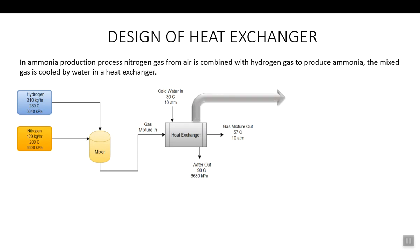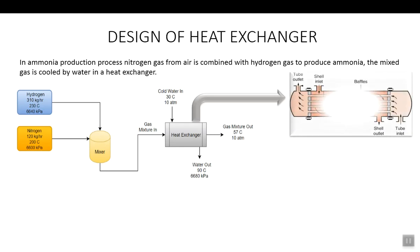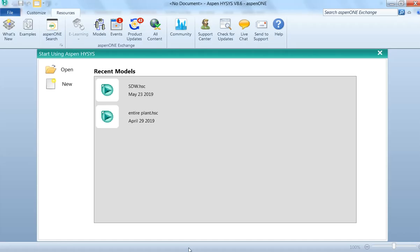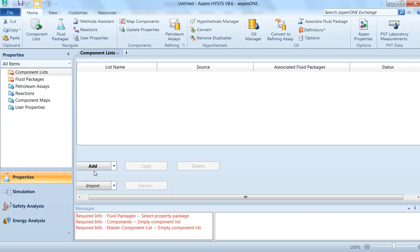We are going to design this heat exchanger — it is a shell and tube heat exchanger with a tube side fluid and a shell side fluid. I will discuss how to select the shell side and tube side fluid. The fluid package we are going to use for simulation is Peng-Robinson. So let us start — once you open Aspen HYSYS, click on New Case.